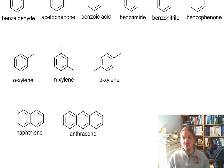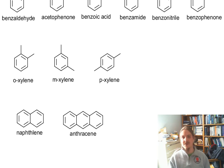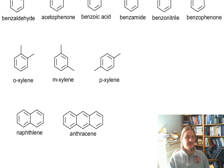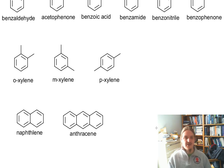In the next video, I'm going to introduce you to some common names of heterocycles. These are cyclic compounds with oxygens and nitrogens and other atoms, not just all carbon and hydrogen. And then we'll get into identifying aromatic rings that aren't benzene. Thank you for watching.